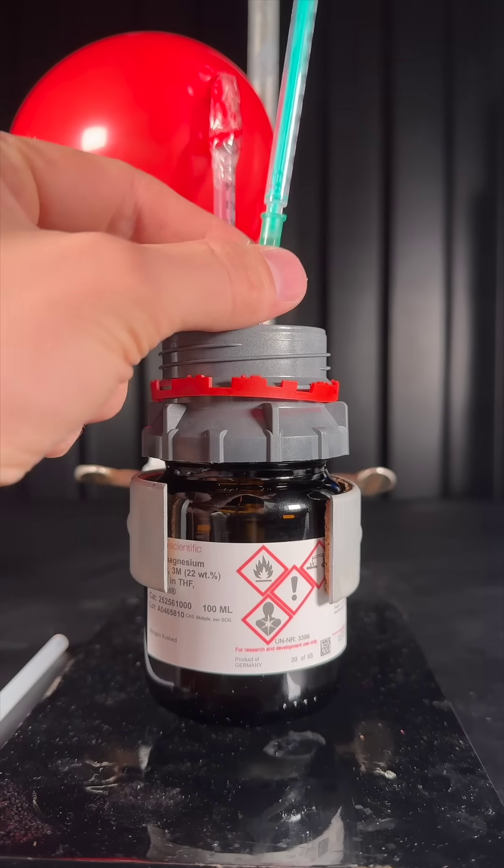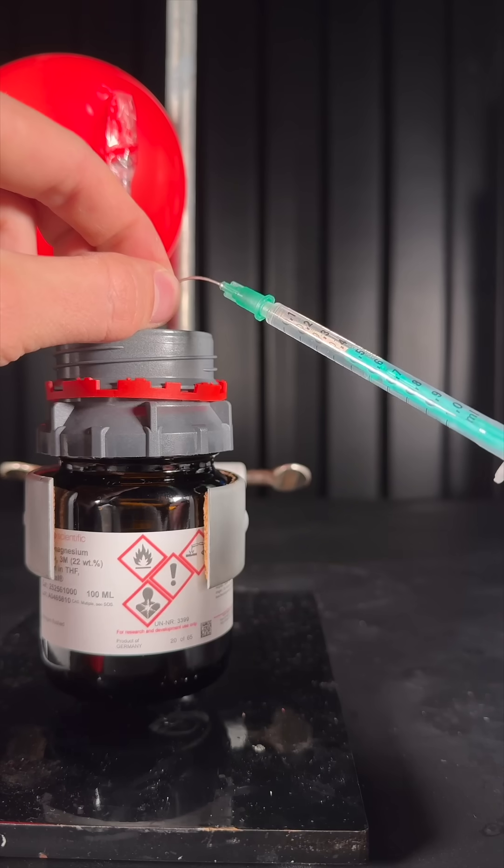I stuck in a syringe, flushed it a couple times with argon, and then sucked in 1 ml of the Grignard reagent.